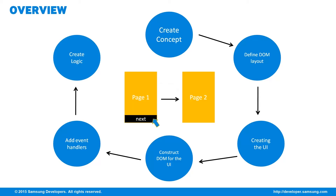We can also add or make control logic. This defines what happens after an event — for example, what happens after clicking the list, such as navigating from page 1 to page 2.